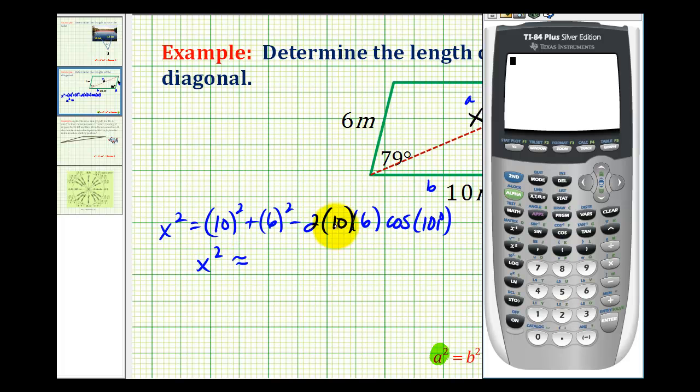And now if we're careful, we can type all this in at one time. We have 10 squared plus 6 squared minus 2 times 10 times 6 times cosine 101 degrees.